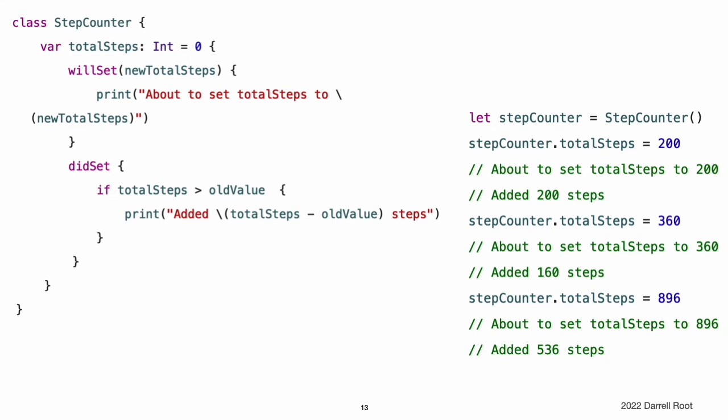Note: if you pass a property that has observers to a function as an in-out parameter, the willSet and didSet observers are always called. This is because of the copy-in, copy-out memory model for in-out parameters — the value is always written back to the property at the end of the function. For a detailed discussion of the behavior of in-out parameters, see in-out parameters.